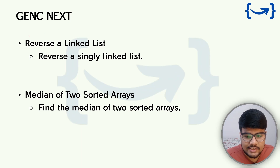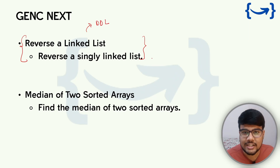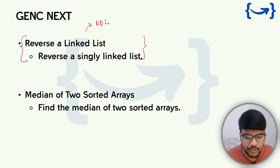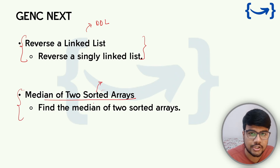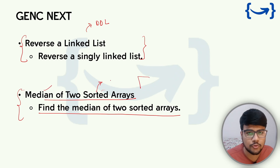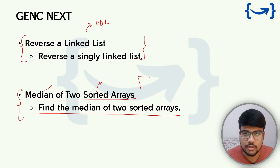For the GenC Next role: reverse a linked list. We also saw questions on doubly linked lists — how to delete a node in a doubly linked list, what a tail pointer is, and how to maintain it when building a linked list from scratch. Also, find the median of two sorted arrays. Note it is the median, not merge. There is a mathematical formula, or you can find it by traversal — try to figure out the optimal approach.